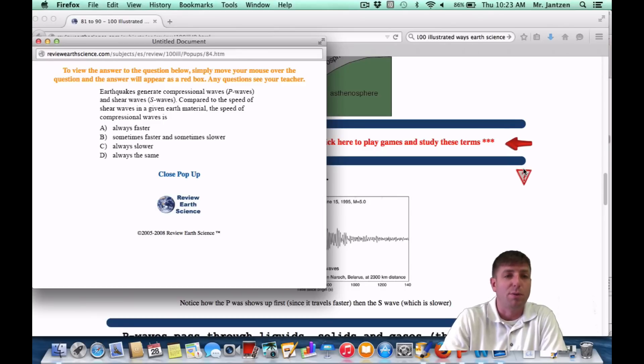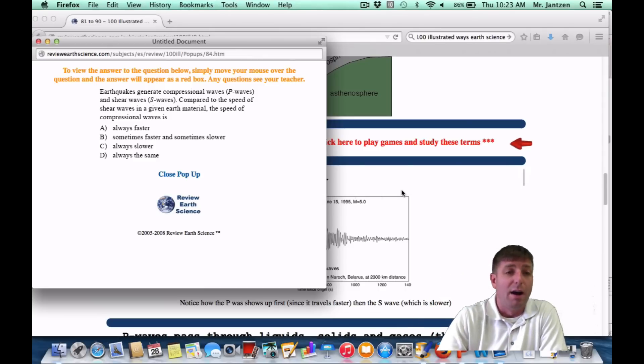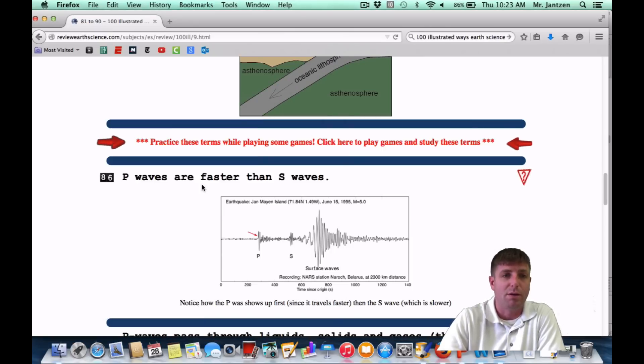As a recent question: earthquakes generate compressional P waves and shear waves, S waves. That's what P waves and S waves are. Compared to the speed of the shear waves in the given earth material, the speed of the compressional waves is what? So P waves are compressional waves. Maybe your teacher used a slinky to exhibit this. It's going to travel kind of with the slinky while the S waves kind of travel in an up and down pattern. So once again, we're going to go with faster. P waves are always faster than S waves. Compressional are always faster than shear.